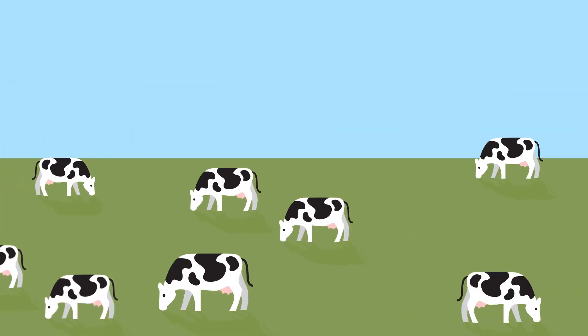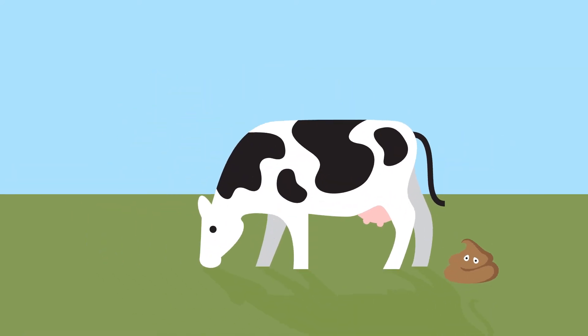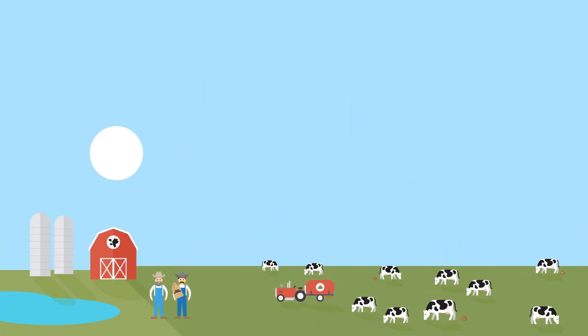What grows on our soil becomes food for our cows, which they eat and then poop, and the cycle begins again, making the most out of our byproducts for our farms and our community.